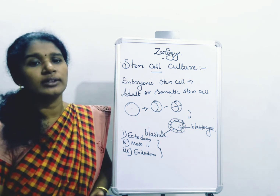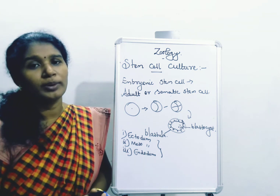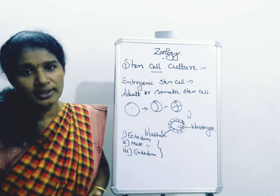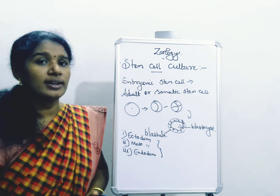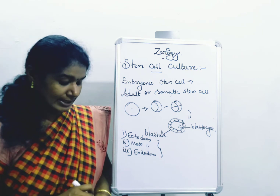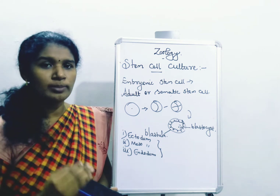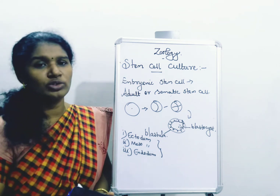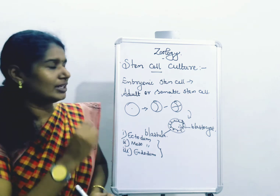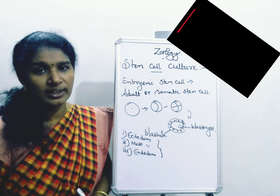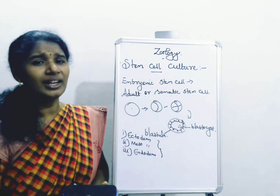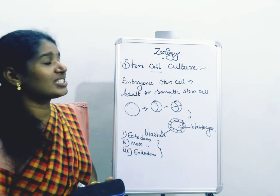If any problem occurs, we can use stem cells to prepare organs or tissue. For example, if the pancreas cannot work properly — because the pancreas secretes two types of cells, alpha cells and beta cells; alpha cells secrete glucagon and beta cells secrete insulin — if the beta cells cannot secrete insulin properly, we know that leads to the disease called diabetes mellitus. So we can prepare those beta cells by the method of stem cell culture and inject them into the pancreas, so the pancreas will again produce insulin properly. This is a major advantage of stem cell culture.